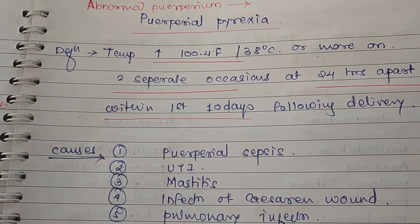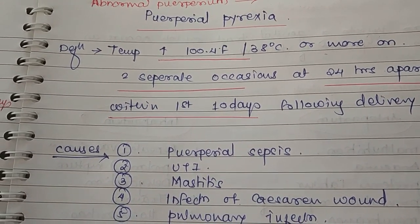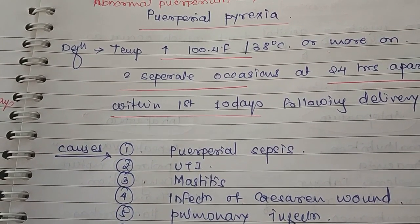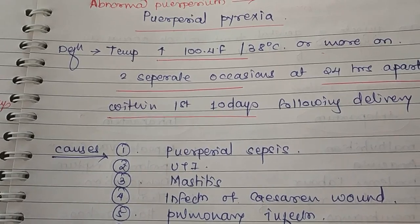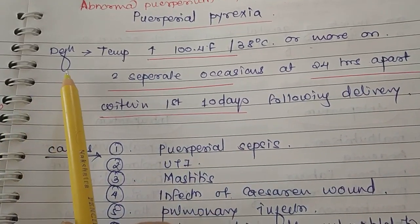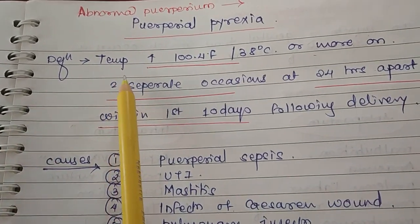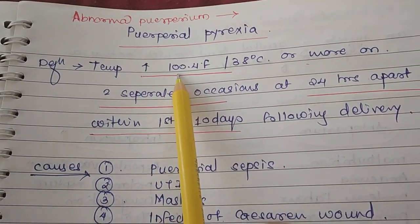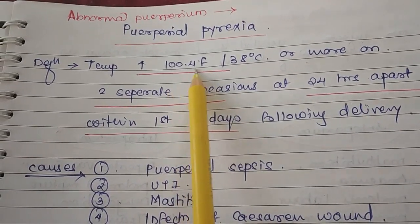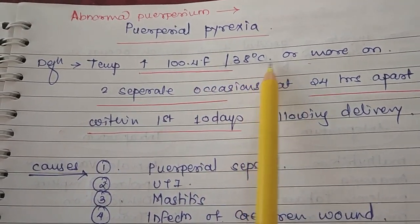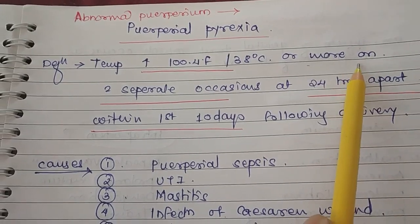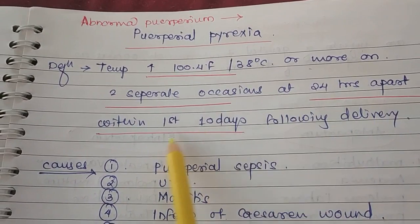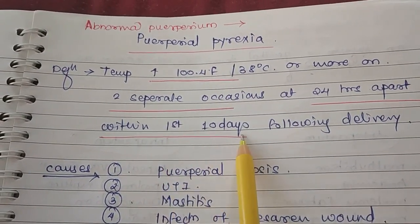In this video we learn about the abnormal puerperium. The most important thing in the abnormal puerperium is the puerperal pyrexia. The definition of puerperal pyrexia is an increase in temperature up to 100.4 degrees Fahrenheit or 38 degrees Celsius or more, on two separate occasions 24 hours apart, within the first 10 days following delivery.